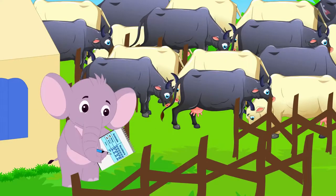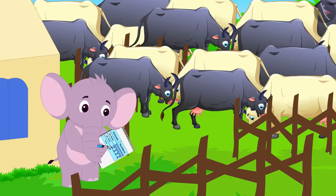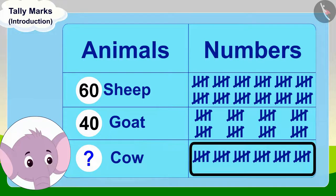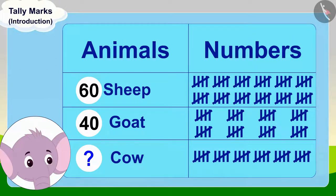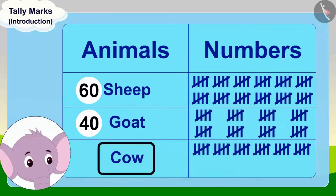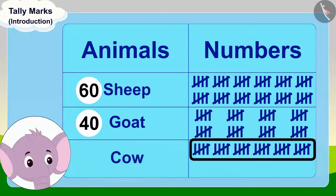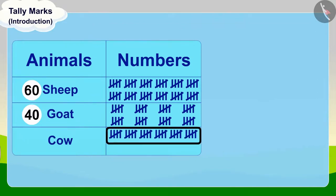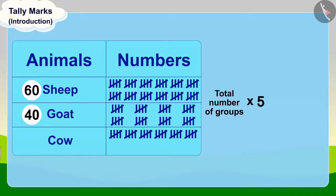Appu now finally counted his cows using tally marks. He drew tally marks in this way to count his cows. Children, do you know another method of counting tally marks quickly? We can count them very quickly by using the table of five. How many tally mark groups are there here? There are six groups of tally marks. To find the total number of cows, we multiply the total number of groups by five. Six times five is thirty. Appu has a total of thirty cows.